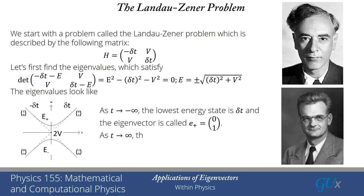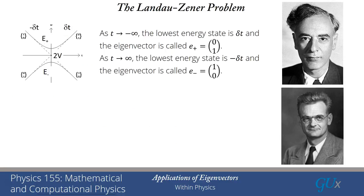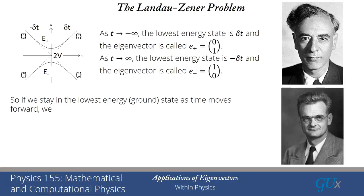That's summarized here: far to the left, or for very early times, we're in the (0,1) state, and then at very late times we're in the (1,0) state. So if we stay in that lowest energy ground state, we're making this transition from the e-plus state to the e-minus state — from the (0,1) state to the (1,0) state, as stated here and as shown on that picture.